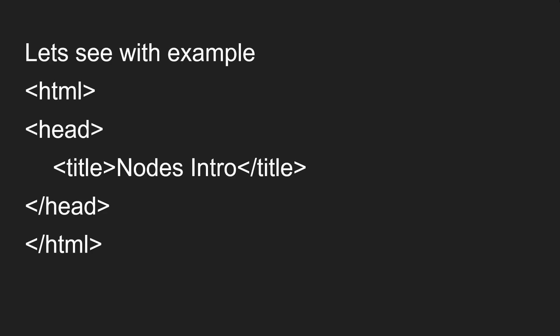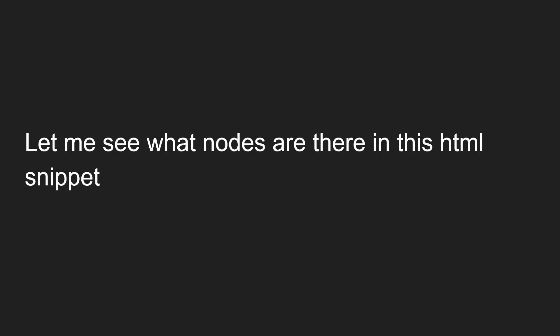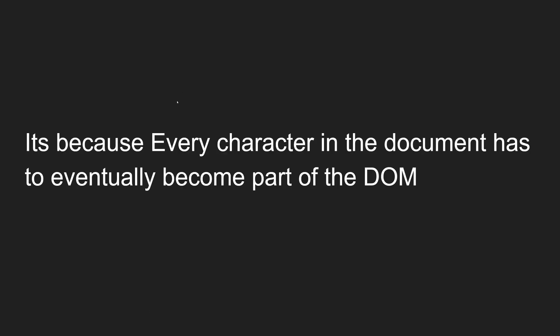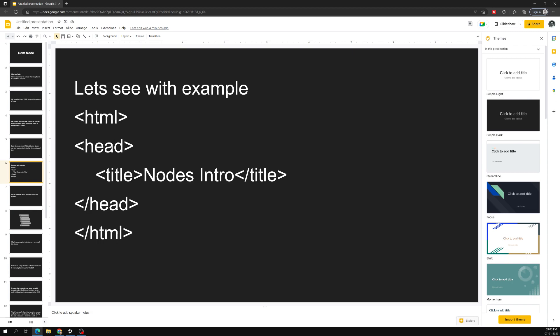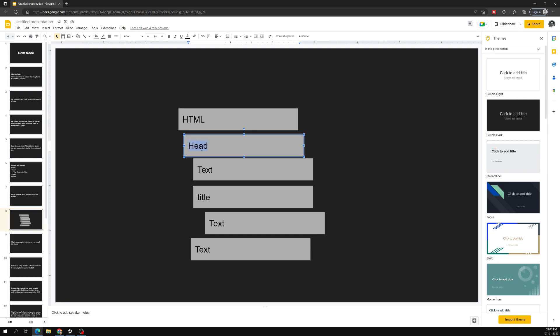So node means every item in a DOM tree — head, paragraph, div — all these items are called nodes. We can say head node, paragraph node, div node. Let's look at an example snippet: I have an HTML element, inside that a head element, inside the head a title tag, and inside the title tag some text — 'nodes introduction'. Let's identify what nodes exist here. First is the HTML element, then comes the head.